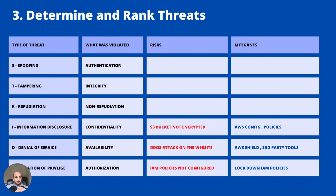Now that you have the threats in place, think about mitigations. If the S3 bucket is not encrypted, you can use AWS Config or bucket policies. For DDoS, you can enable AWS Shield or other third-party tools. In the earlier diagram there was no WAF and no DDoS controls. For IAM, you lock down policies based on least privilege. This is by no means an exhaustive list, but it illustrates the thinking. The more you practice threat modeling, the better you get. Microsoft also has a free threat modeling tool you can download and use.